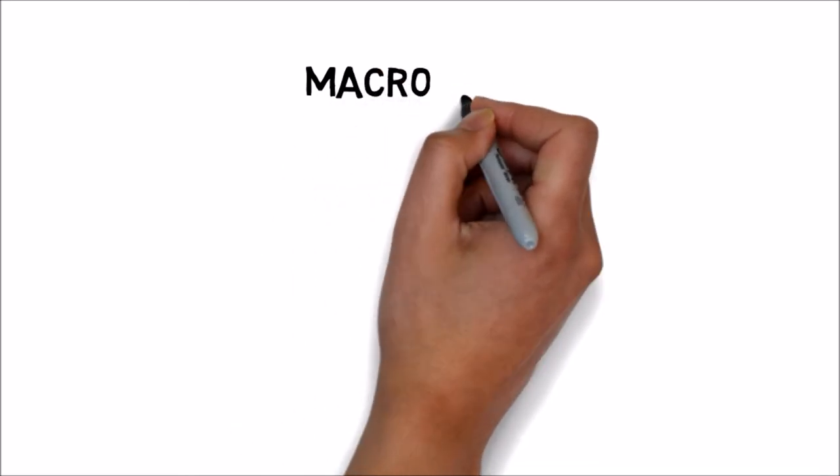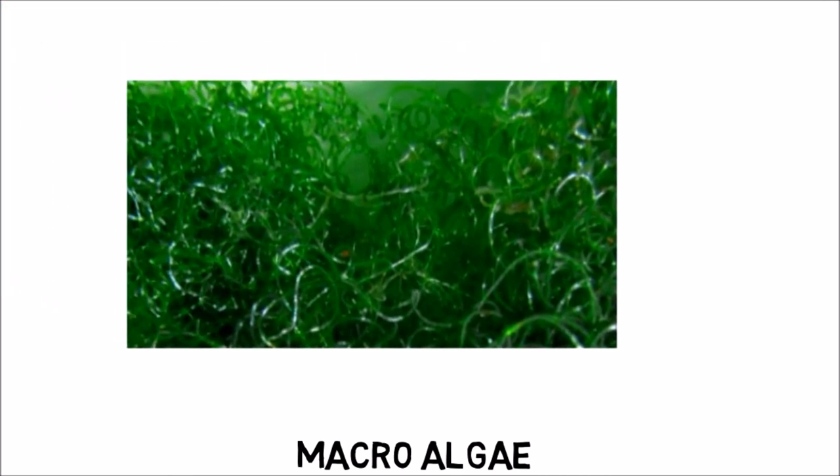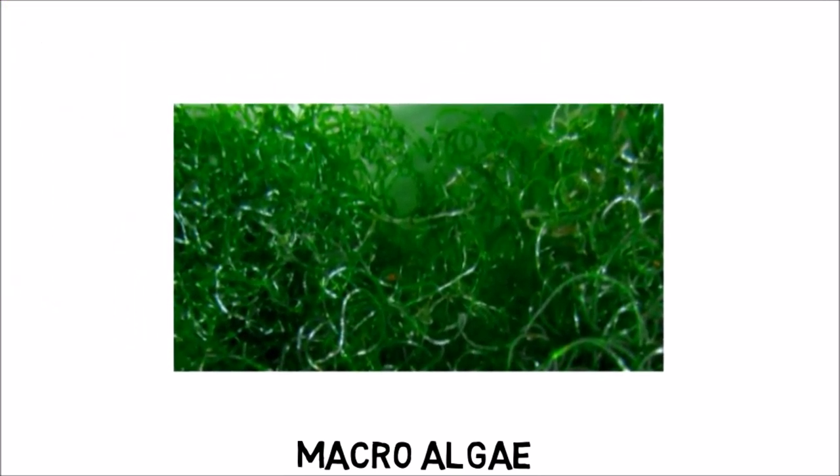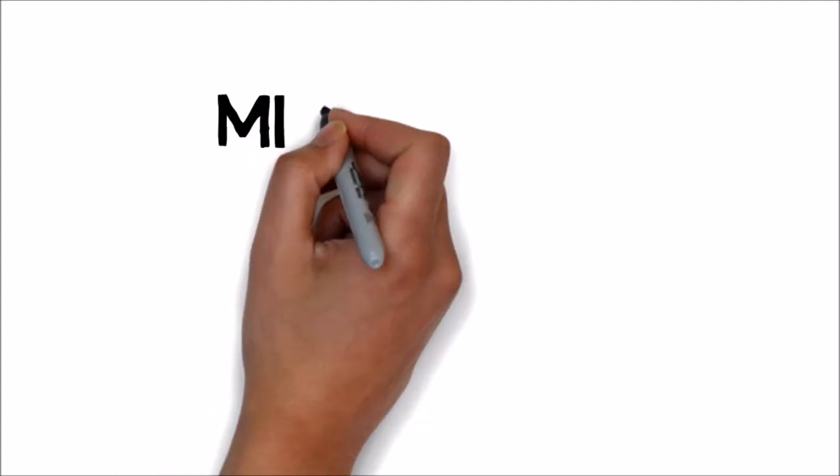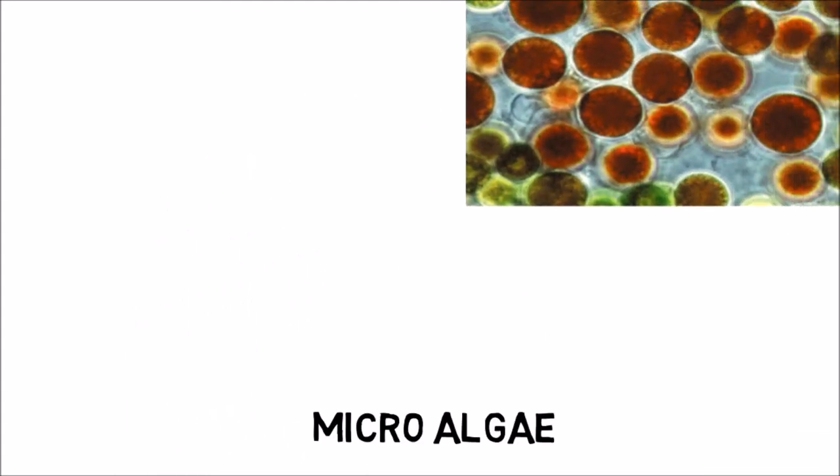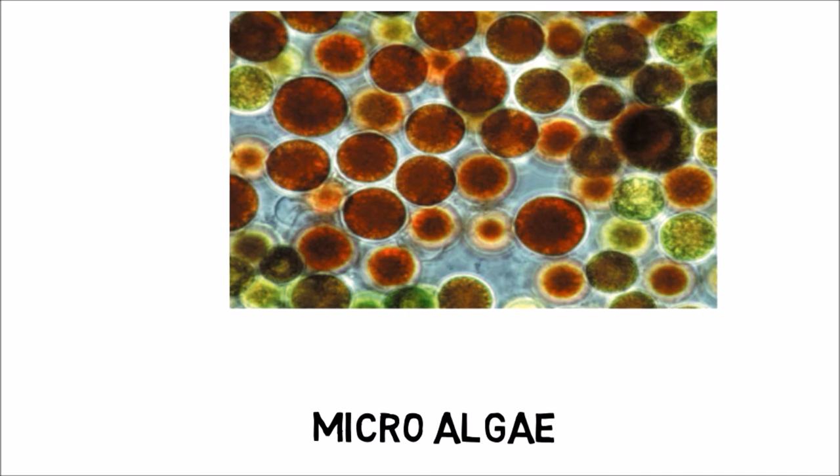There are two types of algae. Macro algae they are large and these algae which have multi-cells are grown in ponds. Largest multicellular algae is known as seaweed. Micro algae they are unicellular and tiny. It normally grows inside water body.